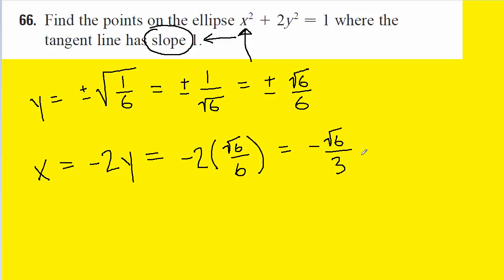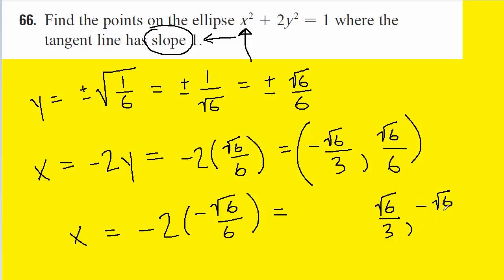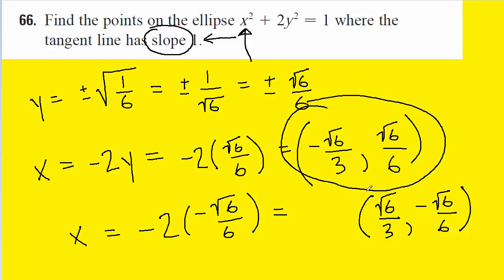When x is negative root 6 over 3, y is positive root 6 over 6 — that's one answer. And to get the other point, we plug in the negative y coordinate, which gives x equals positive root 6 over 3, and y is negative root 6 over 6. And there we have the two coordinates where the tangent line has a slope equal to 1.